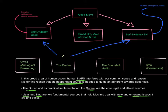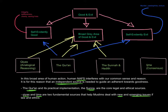The first independent source is the Quran and its practical implementation, as well as the Sunnah and Hadith — the words and actions of Muhammad. We also have Qiyas, which is analogical reasoning, and Ijma — two fundamental sources that help Muslims deal with new and emerging issues of law and ethics, including our bioethical issues of abortion and euthanasia.